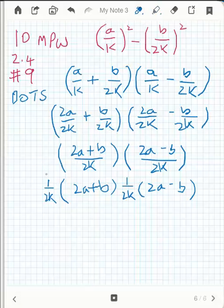Okay, I've got a 1 over 2k and a 1 over 2k multiplied together gives me 1 over 4k squared. 2 times 2 is 4, k times k is k squared. 2a plus b and 2a minus b.